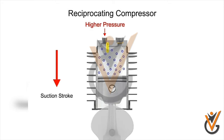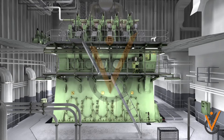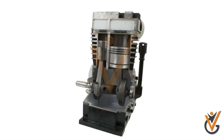The pressurized air moves through the discharge line and gets stored in the air bottle. This pressurized air in the air bottle can be used to run the main as well as auxiliary engines. There can be single-acting and double-acting reciprocating air compressors on the ship.